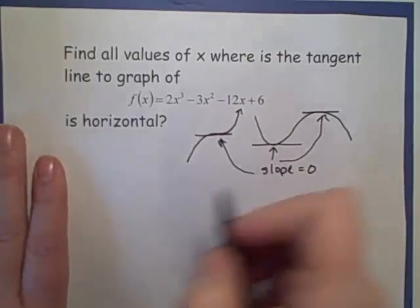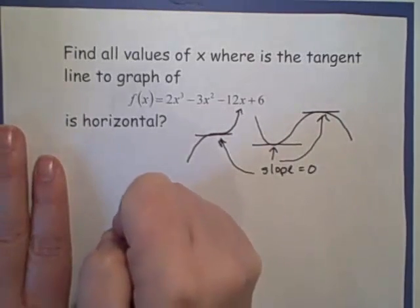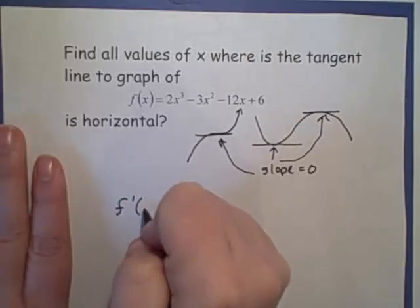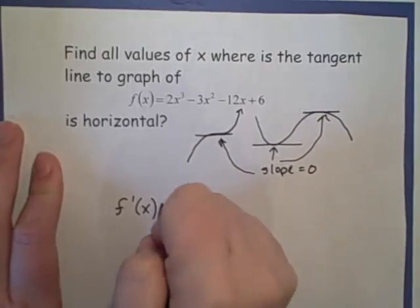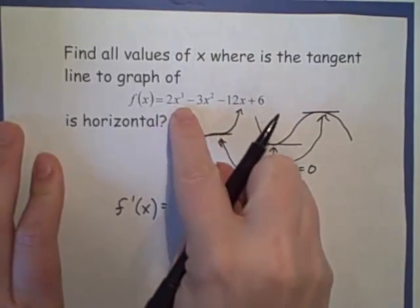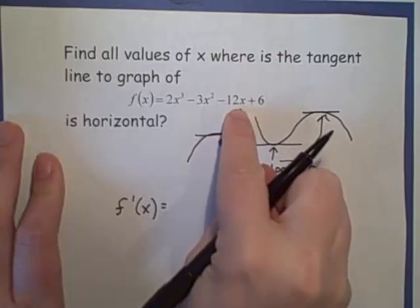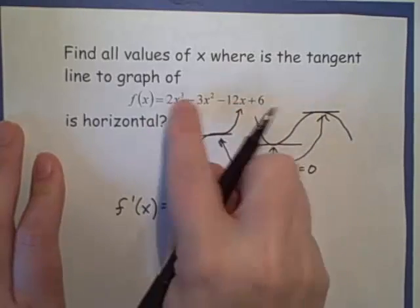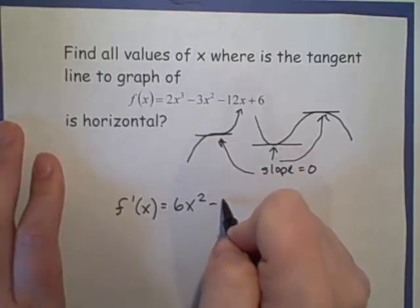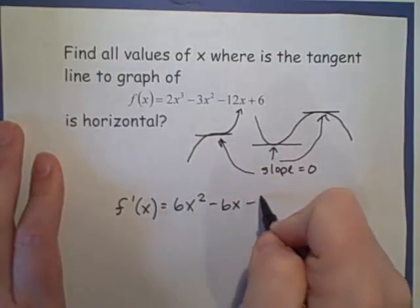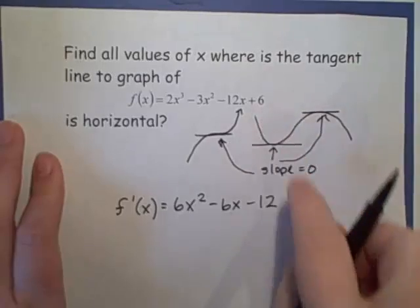So in order to find these places, the first thing we're going to do is actually find our slope equation. So we're finding our derivative. So if I take the derivative of 2x cubed minus 3x squared minus 12x plus 6, I'm going to have 6x squared minus 6x minus 12 plus zero.